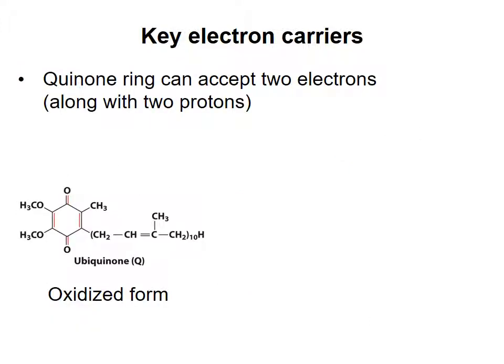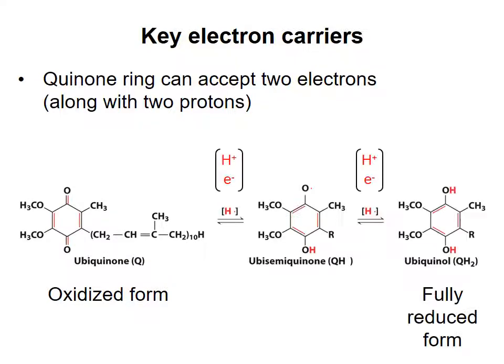Another chemical group that can accept electrons is the quinone group. This group is found in the molecule ubiquinone, or coenzyme Q, which you will encounter again in the citric acid cycle and electron transport chain. Like the nicotinamide group, the quinone group acquires two electrons to go from its oxidized form to its reduced form. Along with the two electrons, it gains two protons, and so the reduced form of coenzyme Q is abbreviated QH2. Now that we have gone over these fundamental concepts related to metabolism, we are in a good position to look at the biochemical pathways of energy metabolism and how they are regulated.